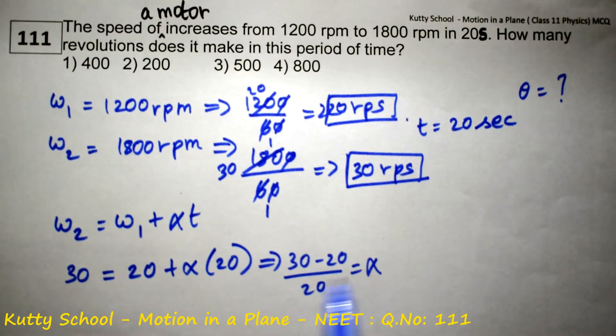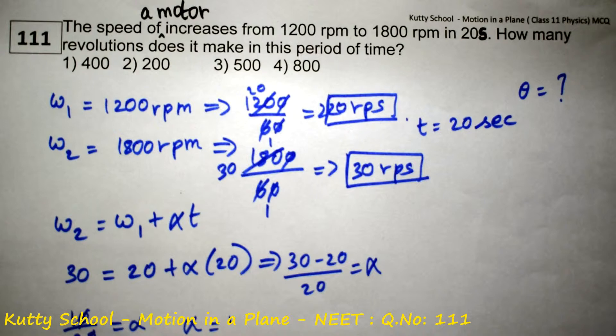Therefore, 30 minus 20, that is 10, by 20 is equal to alpha. Therefore, alpha is equal to... If they cancel, it becomes 0.5.